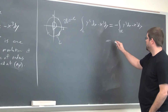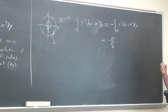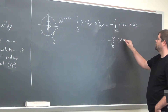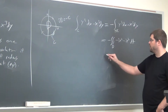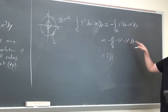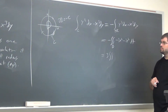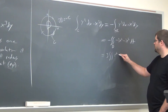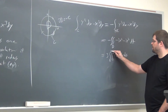Applying Green's theorem, it becomes negative the double integral over D of −3x² − 3y², right? You can pull out the negative 3 to get a 3 out front. Now we're integrating x² + y² over a circle, so the natural approach is polar coordinates. x² + y² becomes r², and with dA = r dr dθ, the bounds are r from 0 to 2 and θ from 0 to 2π.